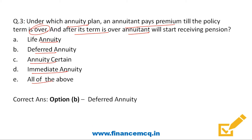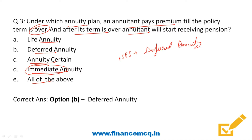The correct answer is option B: deferred annuity. NPS is a type of deferred annuity plan, because under NPS the subscriber pays contributions at regular intervals till retirement age and then starts receiving pension. Under immediate annuity, the individual pays a lump sum amount to the insurer or pension fund manager as a premium in one go, and in return starts receiving monthly payments in the form of pension or annuity.